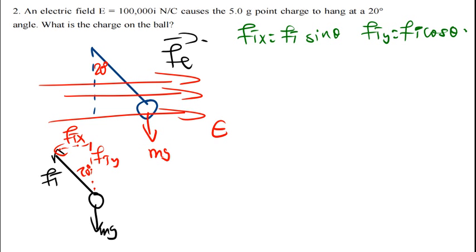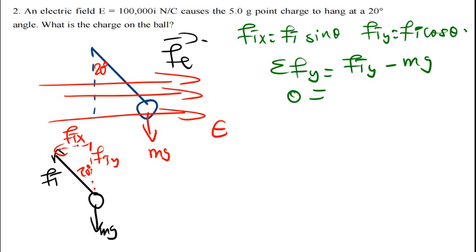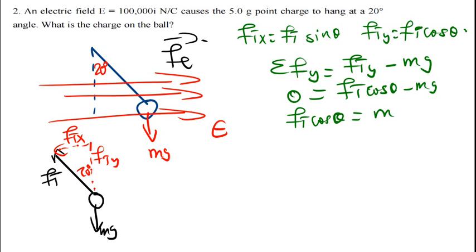Since the ball is not accelerating, the net force is zero. The summation of forces in the y-direction: Fty pointing upward minus mg pointing downward equals zero. Replacing Fty with Ft cosine theta, we get Ft cosine theta equals mg. Our goal is to find the charge, so we're not interested in the tension force here. Let's call this Equation 1.